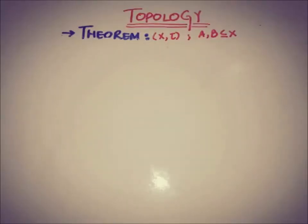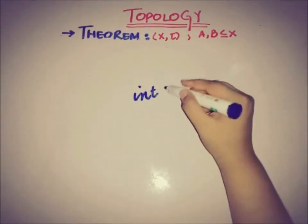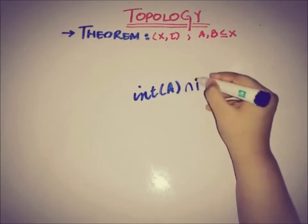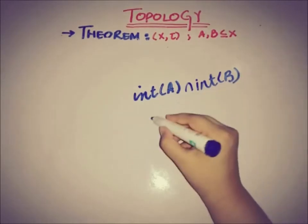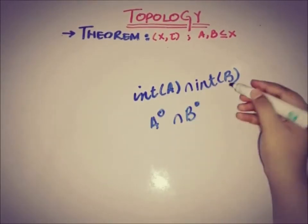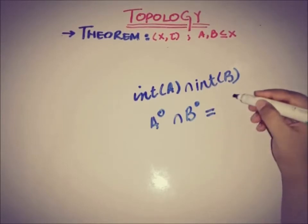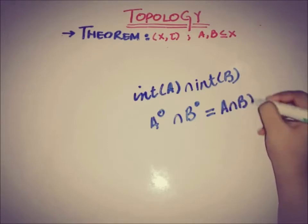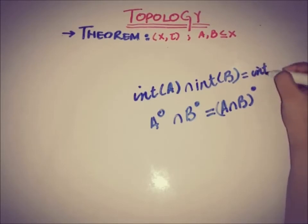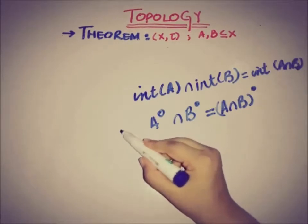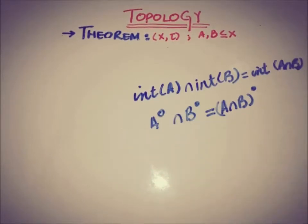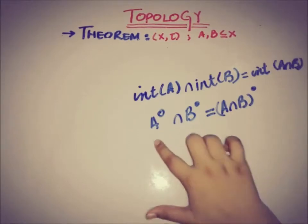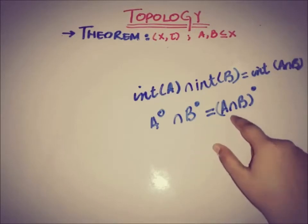Hello everyone, this is Dee from A Academy. In this video we will talk about some theorems related to the interior of a set in a topological space. The theorem states: if X and tau is a topological space and A and B are two subsets of X, then the interior of A intersection B equals the interior of A intersection the interior of B.